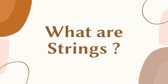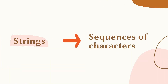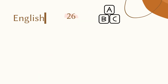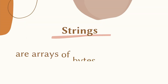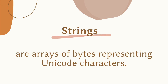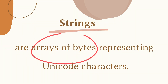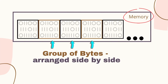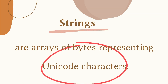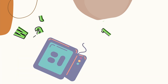First on our list is: what are strings? Strings are sequences of characters, and a character is a symbol. The English language has 26, Chinese has 50,000, while Hindi has 52 symbols. In Python, strings are arrays of bytes representing Unicode characters. The first part of this definition means an array of some defined length — a collection of byte-sized elements arranged side by side in memory.